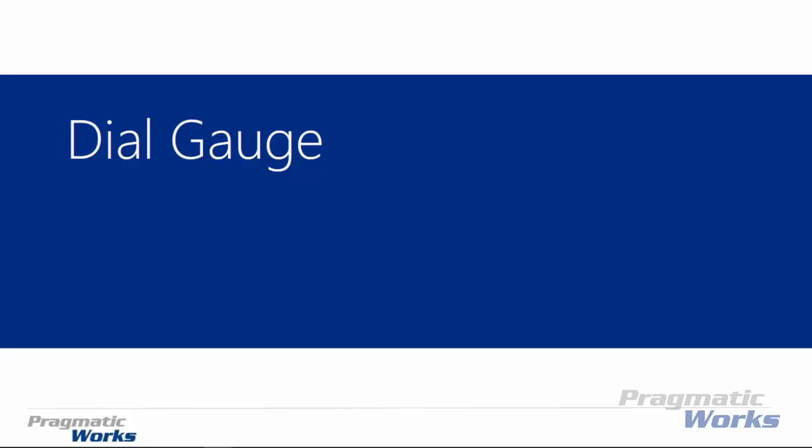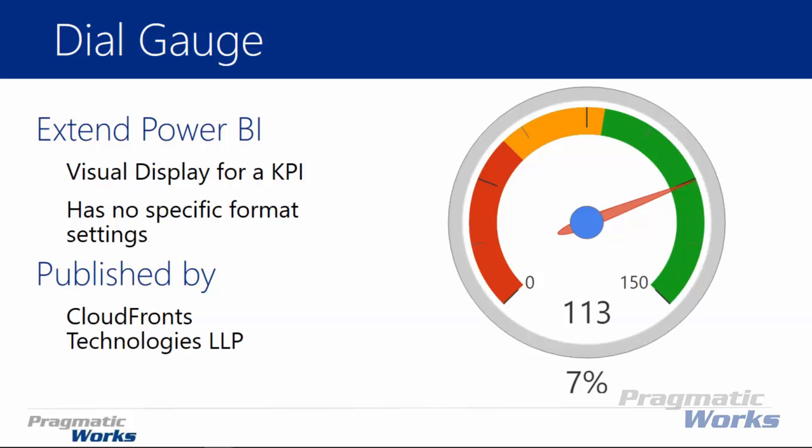Hi and welcome back to the Power BI custom visuals course. My name is Devin Knight and in this module we're going to be looking at the dial gauge. The dial gauge is a pretty simple visual but it's pretty good at showing things that you would want to see from a KPI — if you had KPI type data you would be able to visualize it inside of a gauge.